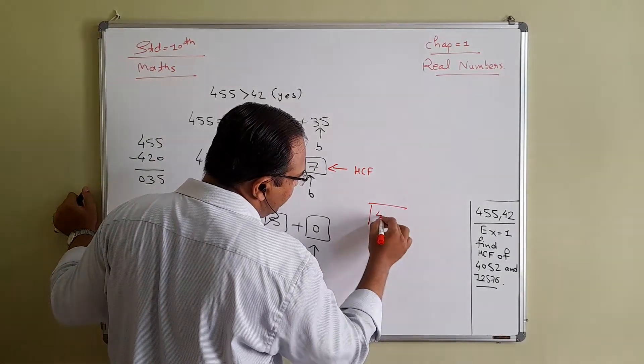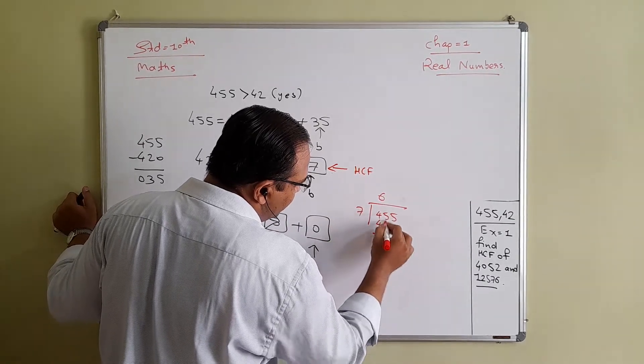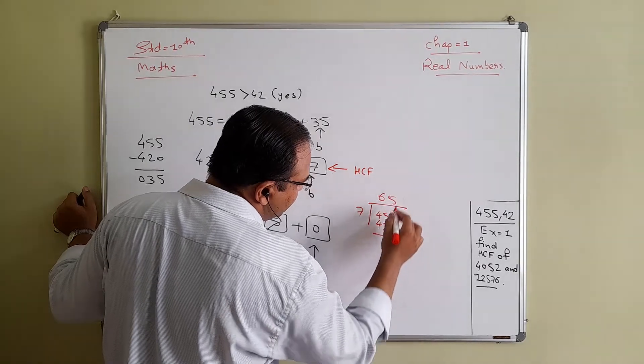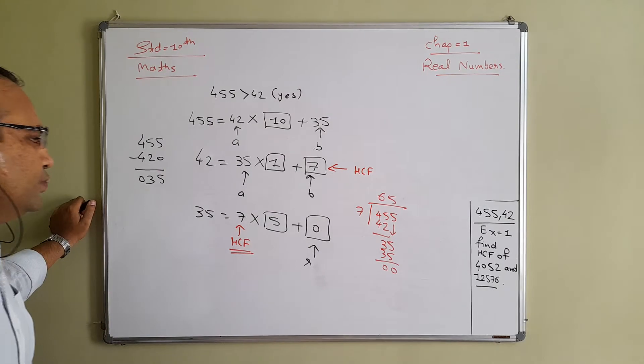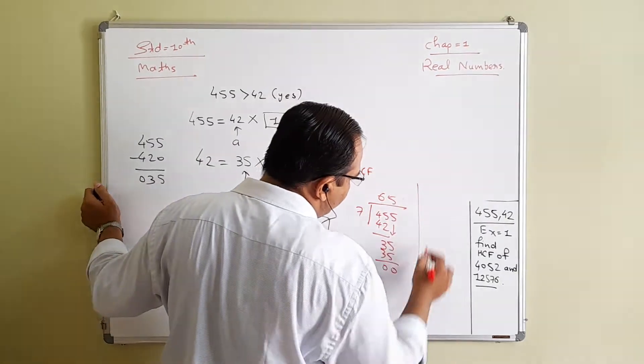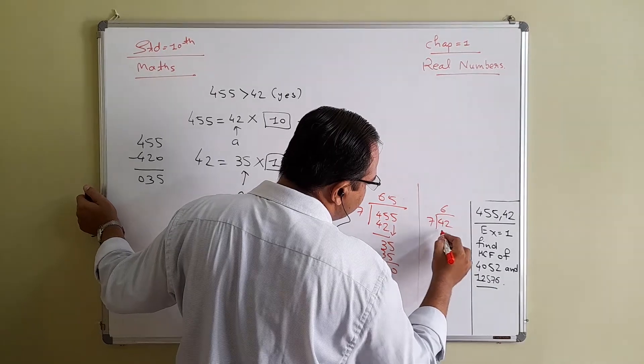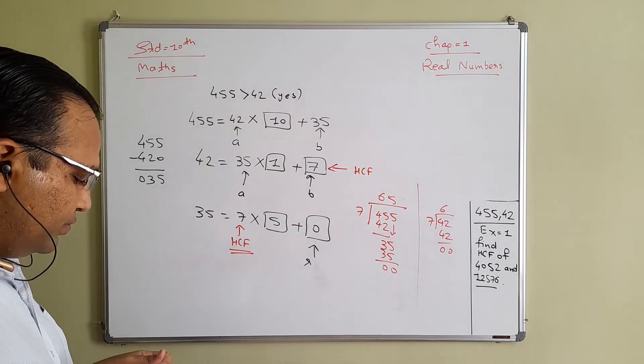So let's see, can we divide 455 with 7 or not? 7 sixes are 42, 5 minus 2 that is 3, 35. 7 fives are 35. So here Euclidean division lemma is true. We will see about 42. If you know the table of 7, 7 sixes are 42. So here also it is possible. So Euclidean division lemma is true.